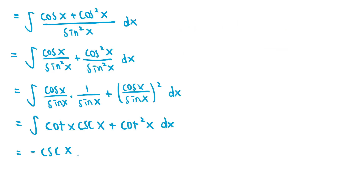So we've worked out what the integral of cotangent squared of x is. We just need to add the result onto the expression, which is negative cotangent of x minus x plus C. So the integral of cosine of x over 1 minus cosine of x is negative cosecant of x minus cotangent of x minus x plus C.